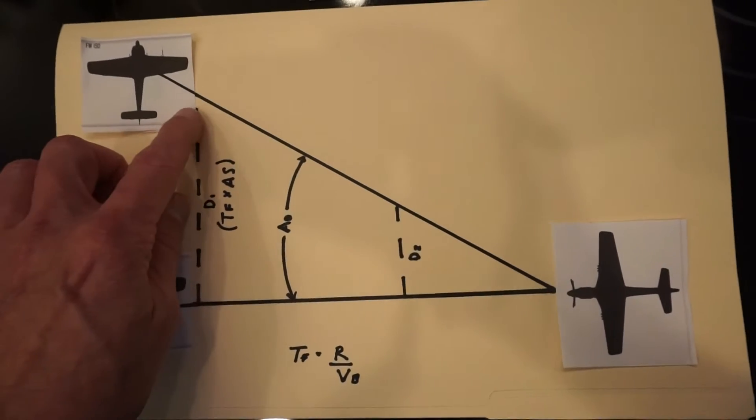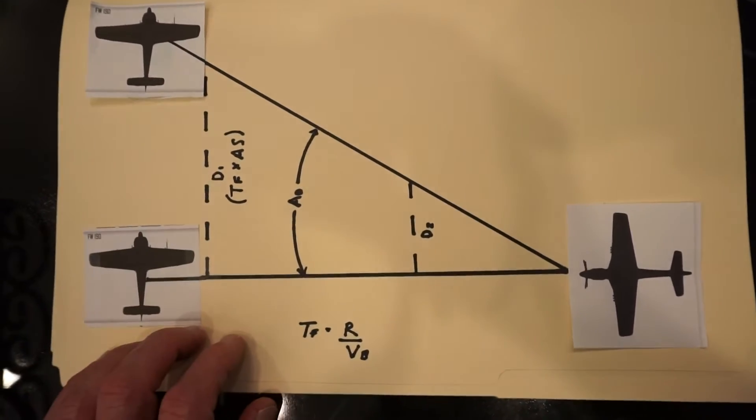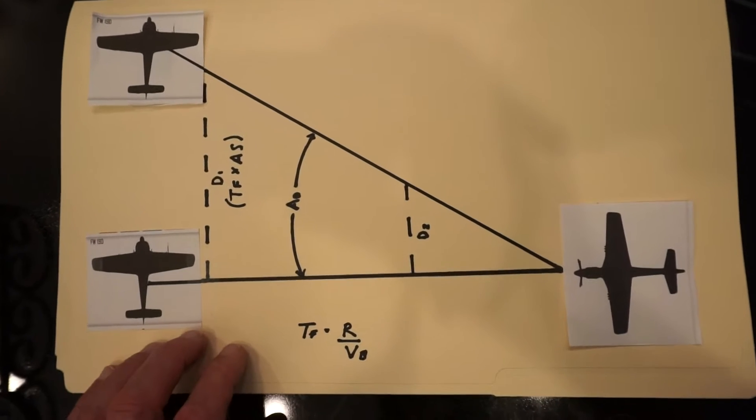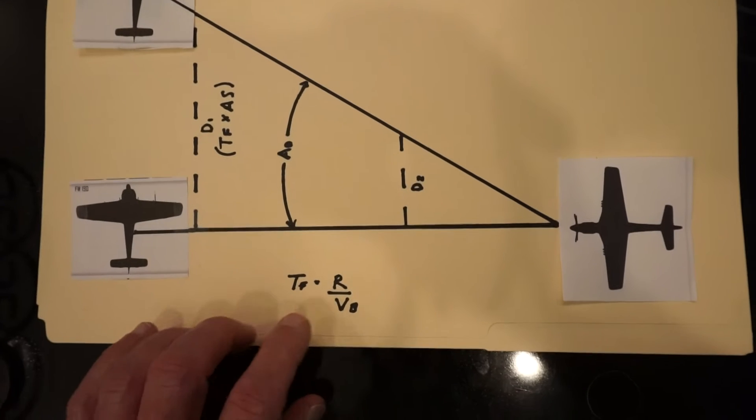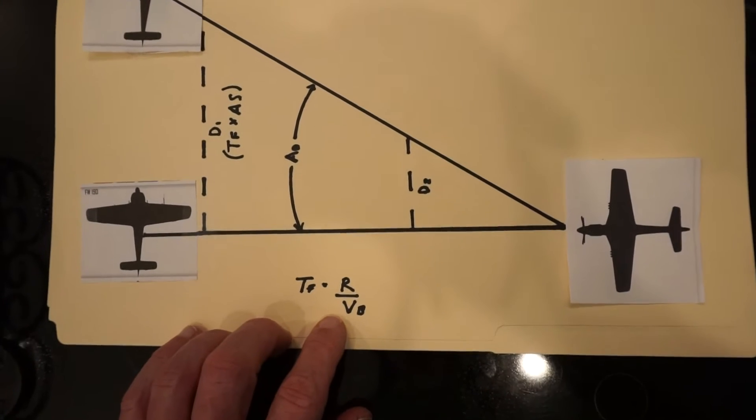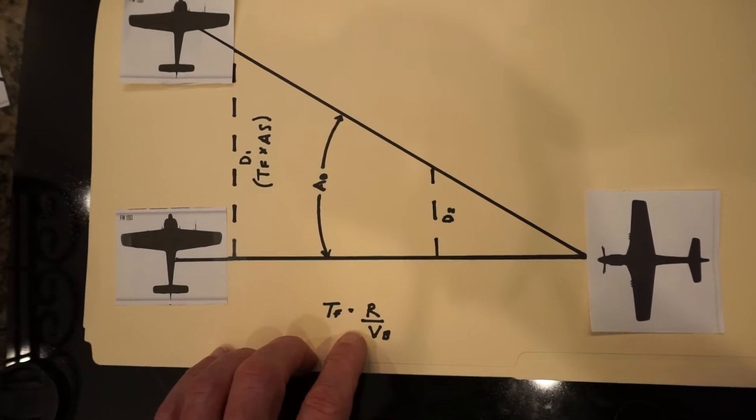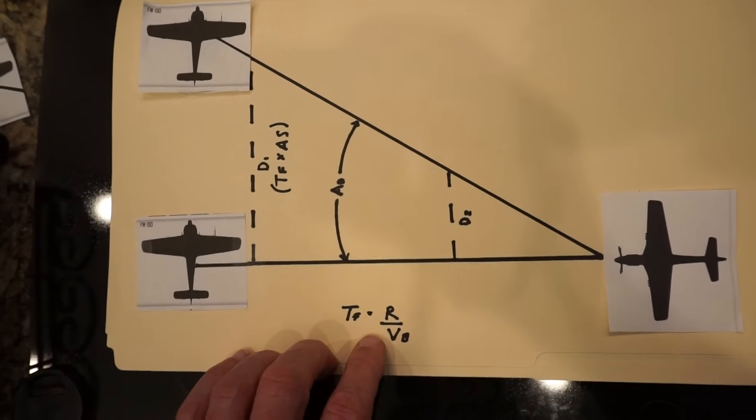This distance is called the lead and is determined by the enemy aircraft airspeed and time of flight. The time of flight is simple to determine as it is your range to the enemy fighter divided by the muzzle velocity of your ammunition or the speed of your bullets which is a known value.